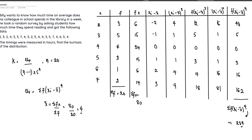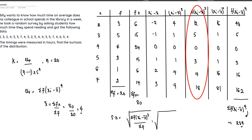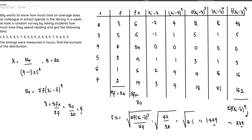Next, we get the standard deviation. The formula is the square root of summation of f times (xi minus x-bar) squared, divided by summation f. The sum of f(xi − x-bar)² equals 12 + 5 + 0 + 3 + 4 + 18 = 42. So standard deviation equals the square root of 42 divided by 20, which gives 2.1. Keeping three decimal places, the sample standard deviation is 1.449.